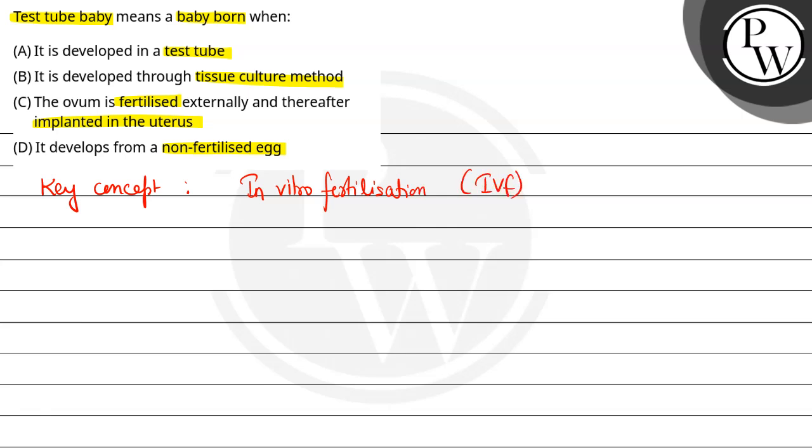IVF means in vitro, which means within the lab conditions, in a test tube. Test tube me fertilization hogi, which will result in test tube baby. In the procedure, first the female is given fertility hormones, which causes super ovulation.